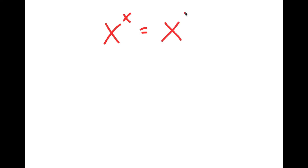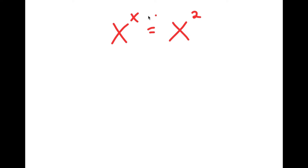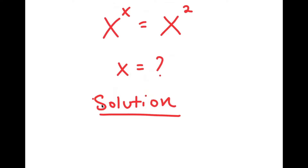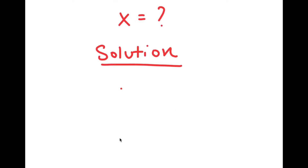For this video, I'm going to be solving the equation x to the power of x is equal to x to the power of 2. My only variable in this equation is x, so that's what I'm going to be solving for. I'm going to rewrite this problem down here so I have a little more solving space. My equation is x to the power of x is equal to x to the power of 2.